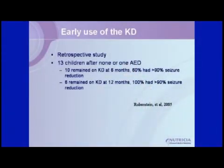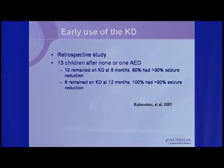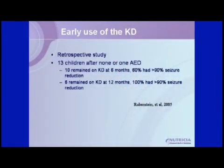I maintain that children with epilepsy should be tried on medication first, though we know the diet can work when used early. A study by Rubenstein et al. reported on 13 children who used the ketogenic diet after being on either one anticonvulsant or no anticonvulsant medications. Ten of those children were still on the diet at six months, and 60% had had a more than 90% reduction in their seizures.